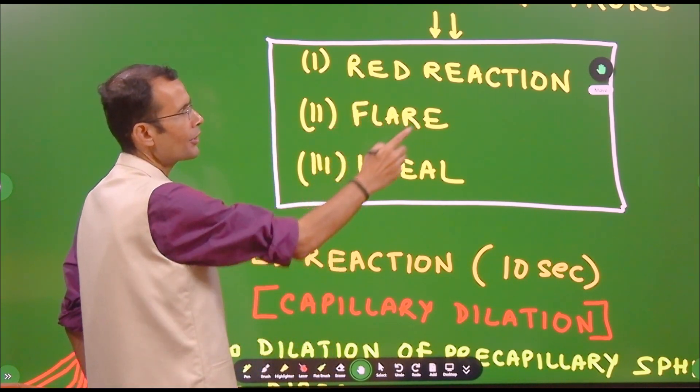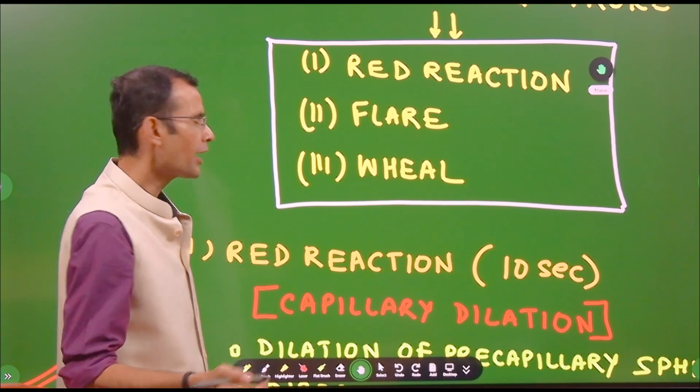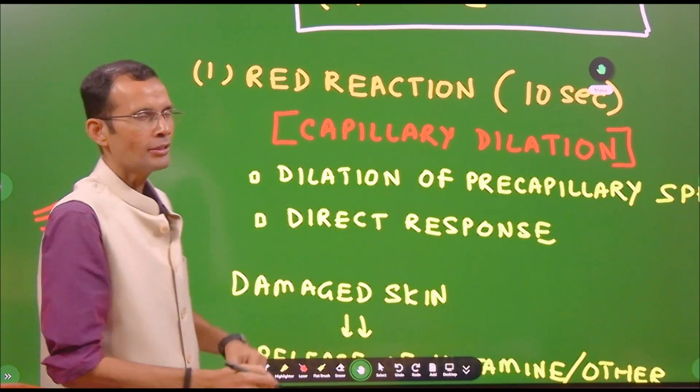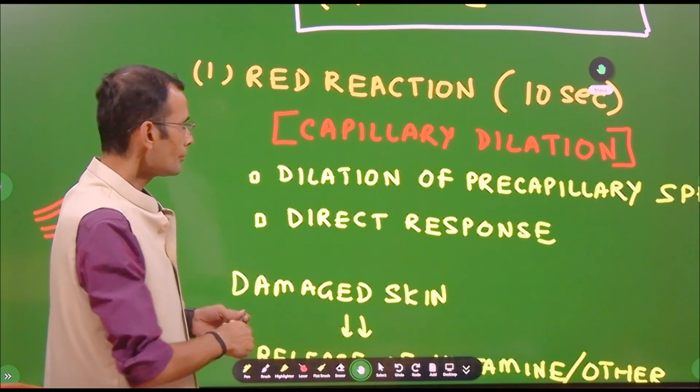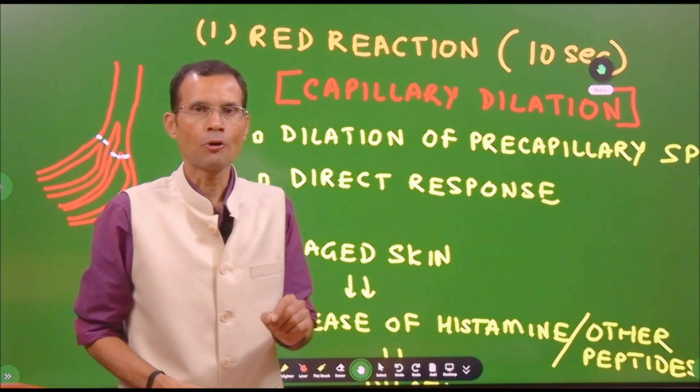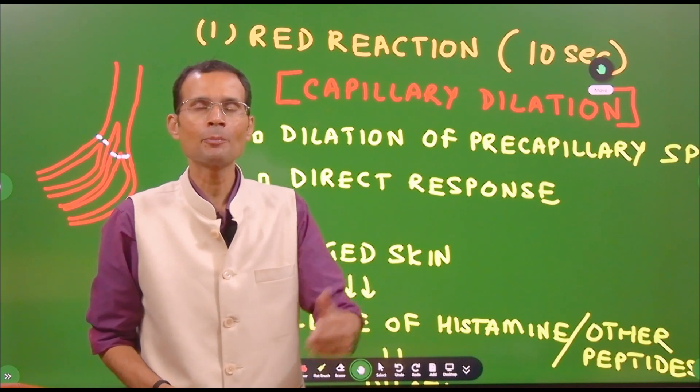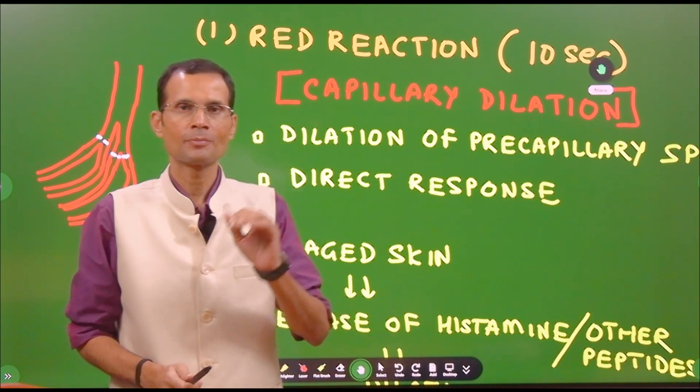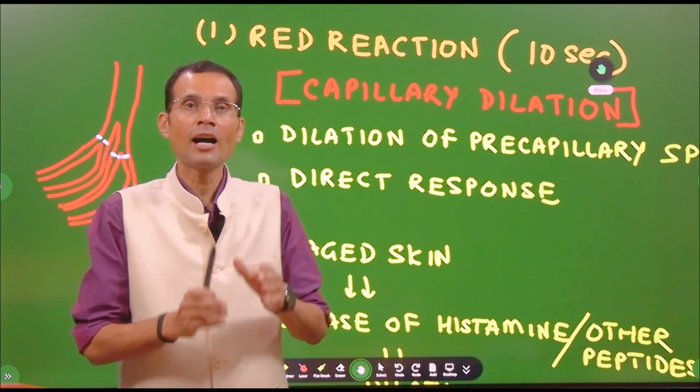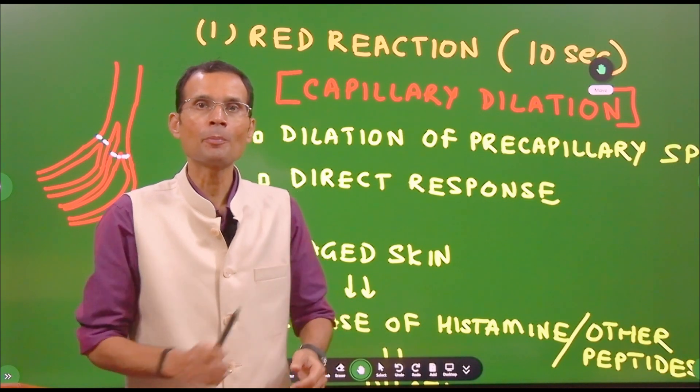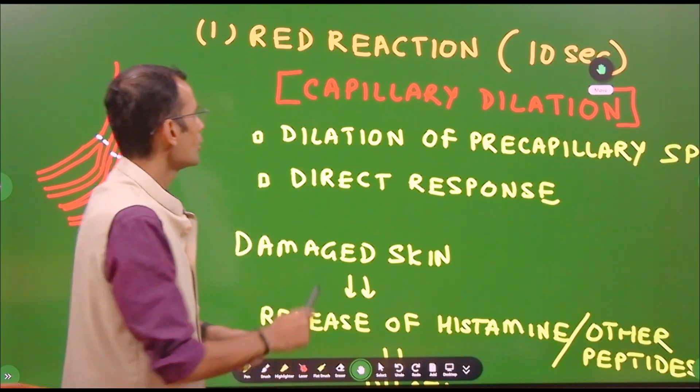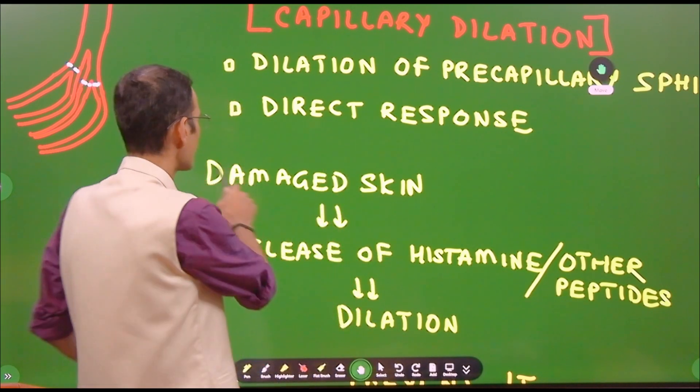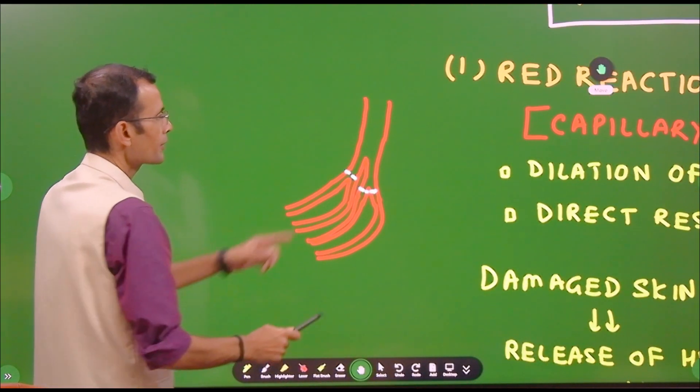However, if a firm strong stroke is applied to some part of the skin with maybe a pointed object like a pen, then you see three reactions occurring one after the other and therefore this is called as triple reaction or triple response. First, there will be a red reaction, red line or red reaction followed by flare and then finally wheel. Red reaction within 10 seconds.